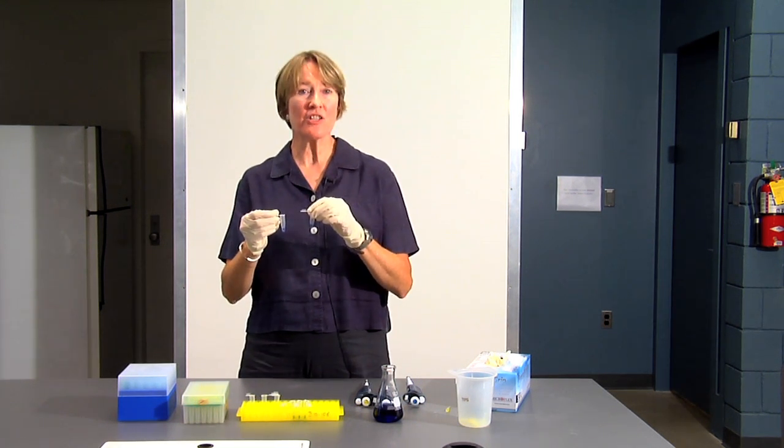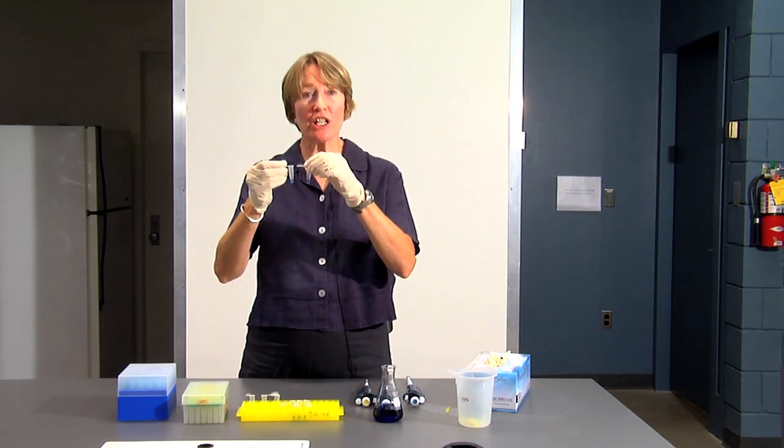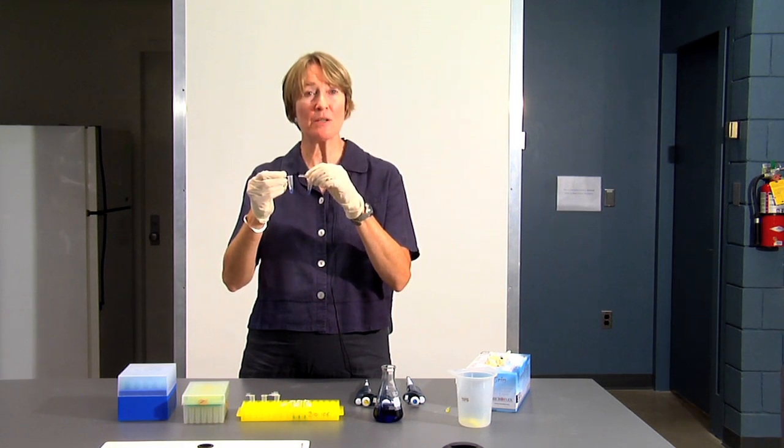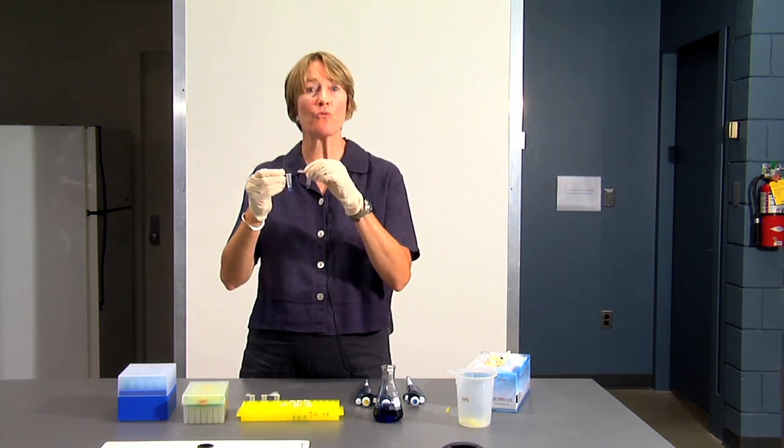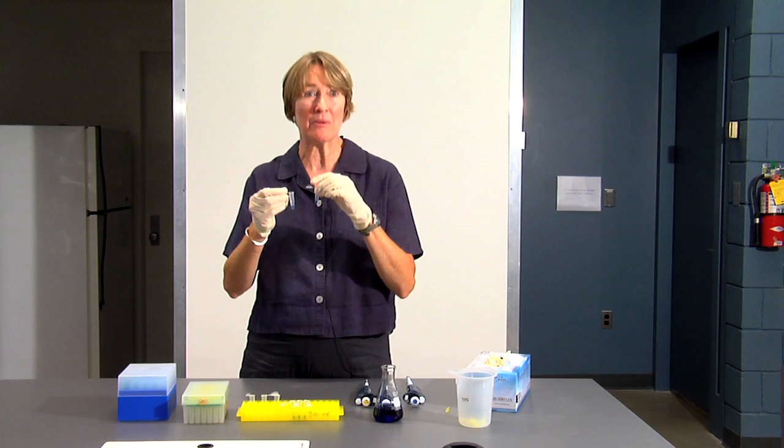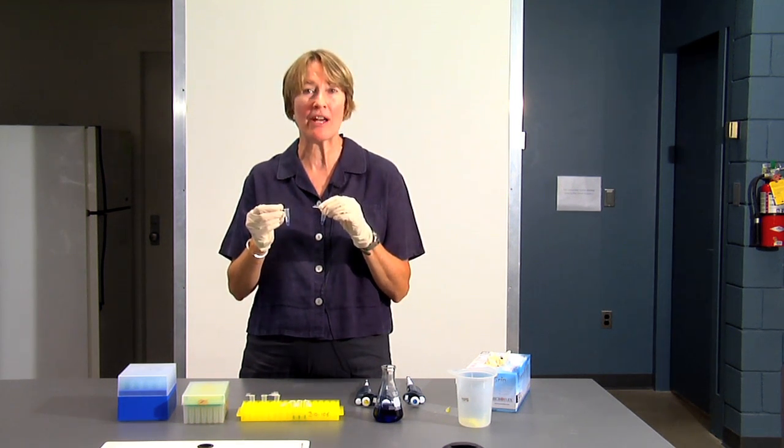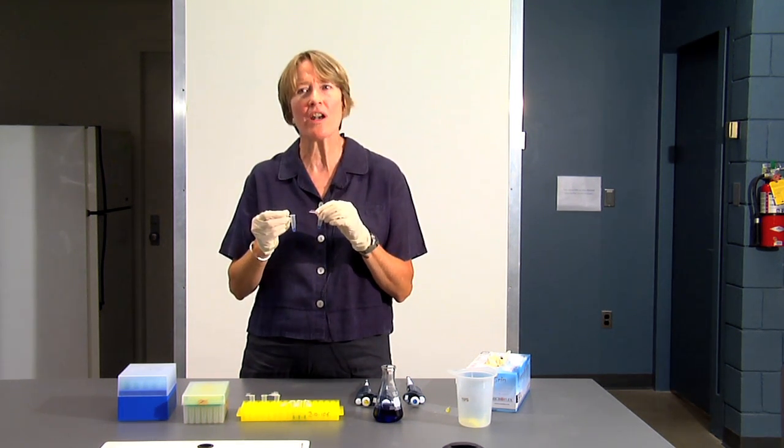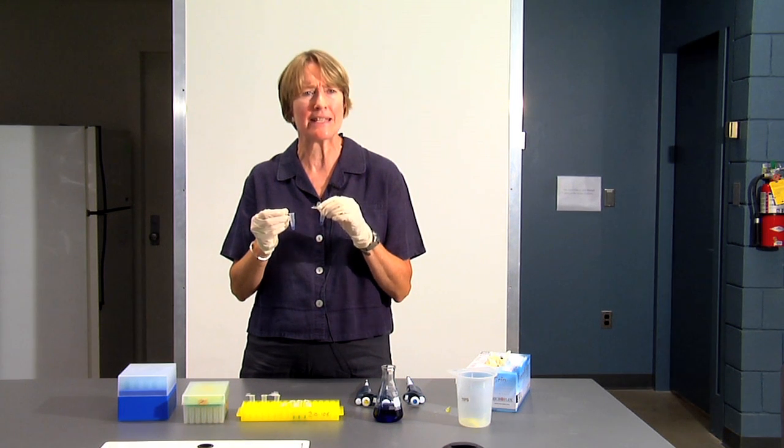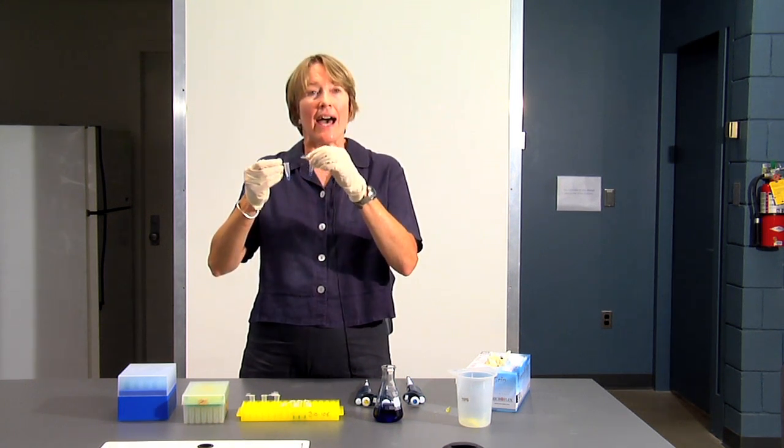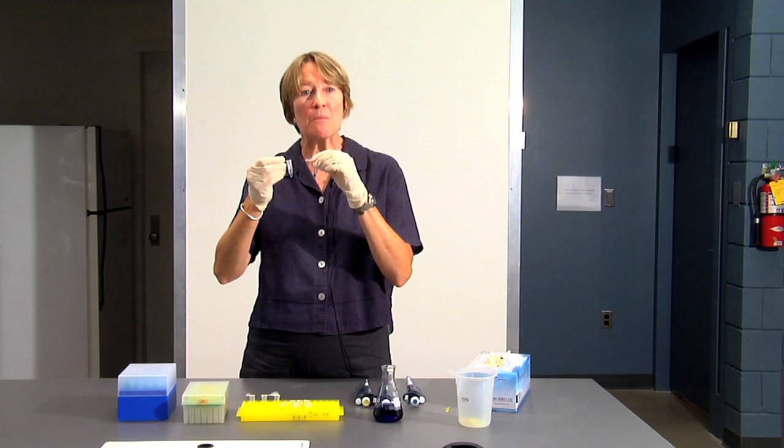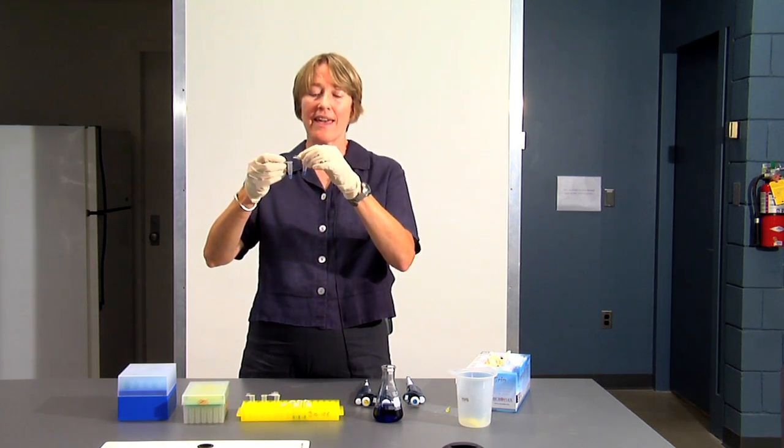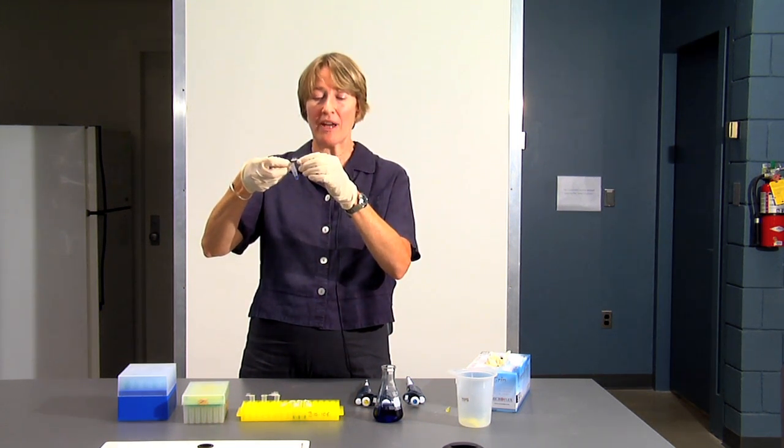Something that biologists often do when they're pipetting is they look at what they're pipetting and they check to make sure that they've pipetted the right amount in the tip. In other words, once I've pipetted 100 microliters over and over, I know what 100 microliters looks like in the tip. So I should be checking the tip to make sure that there are no bubbles and that we have 100 microliters in the tip.